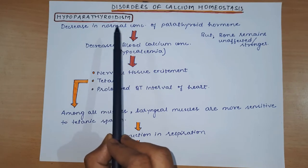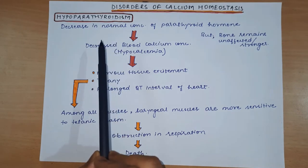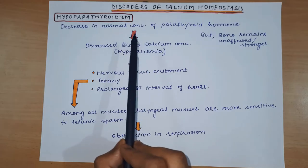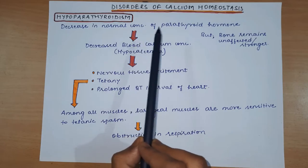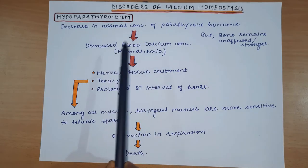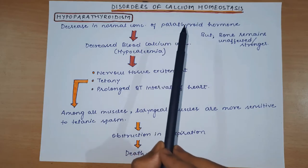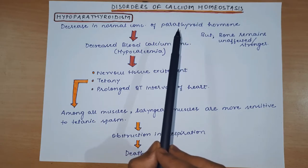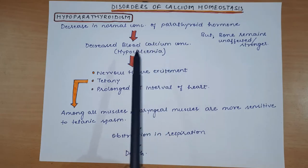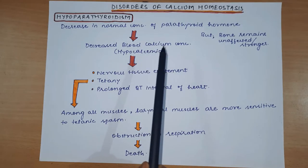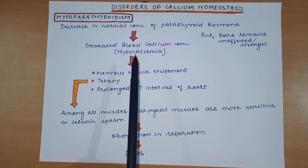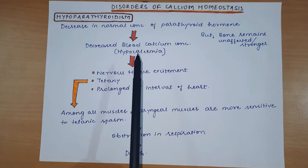In hypoparathyroidism, when the normal concentration of parathyroid hormone in our body decreases - that is, the concentration of parathyroid hormone in our blood plasma decreases - the main function of parathyroid hormone, which is to increase calcium in blood plasma, cannot be performed adequately. As a result, the calcium concentration in blood decreases, that is, hypocalcemia develops.